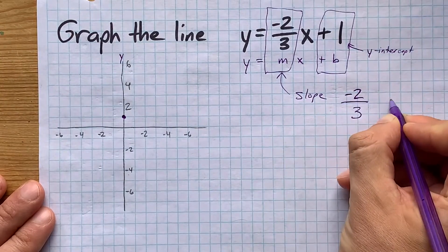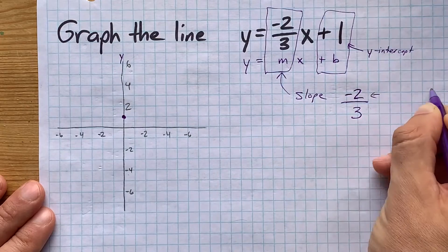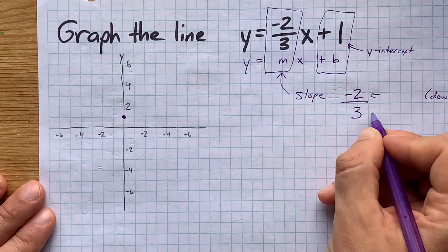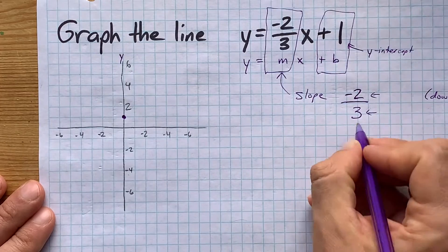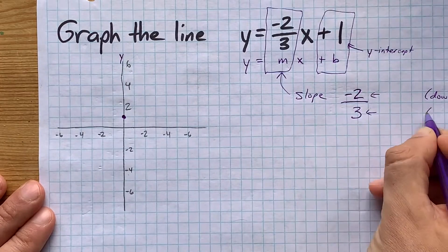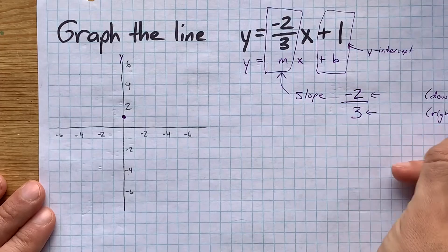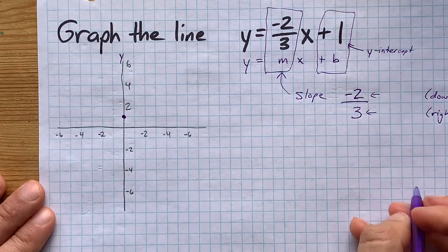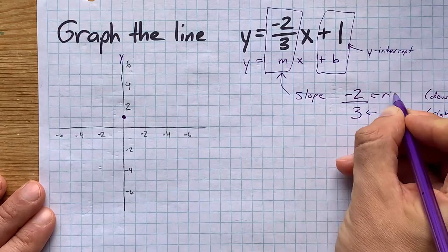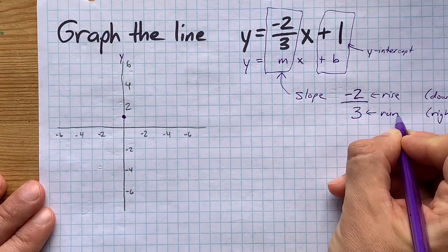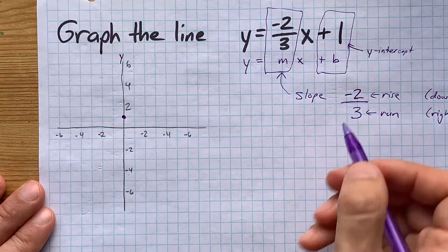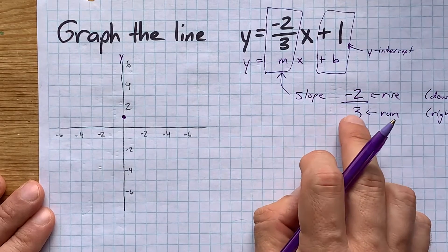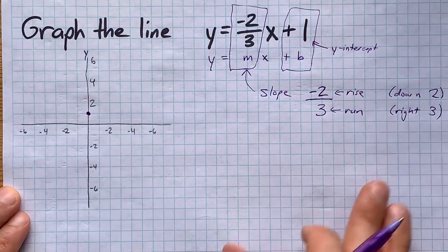A negative means you're going to go down two as you run some distance. The run, or denominator of this fraction, happens to be three. Now I've kind of skipped by saying the word down out loud there. Slopes are, by definition, rise over run. And so the negative two here is how far up and down you're going as you do this amount of run, which I treat as always to the right.